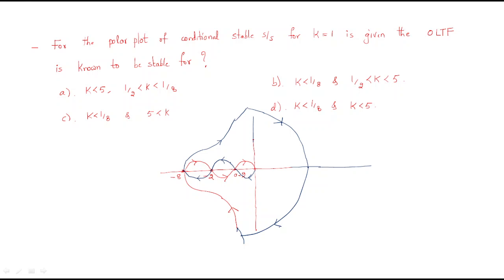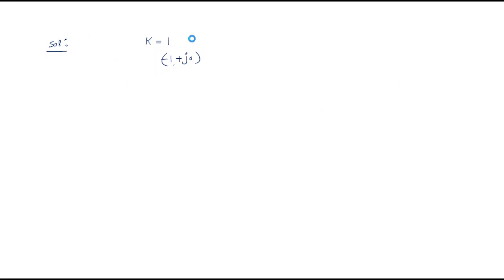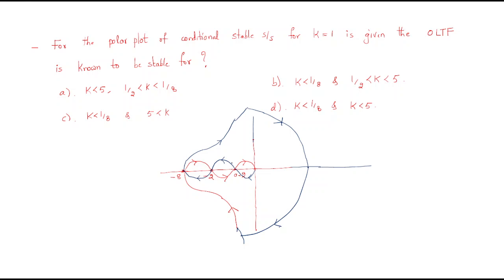Starting from here, the plot is continuously increasing. For the conditionally stable system, k value is directly given as 1. Stability is decided by the point minus 1 plus j0, as we all know. So we insert k into the key point values: this point becomes minus 0.2k, this value becomes minus 2k, and this value becomes minus 8k.